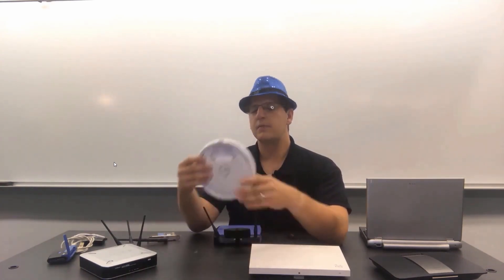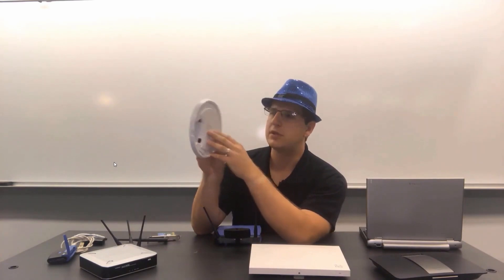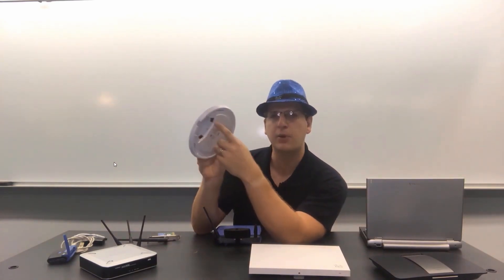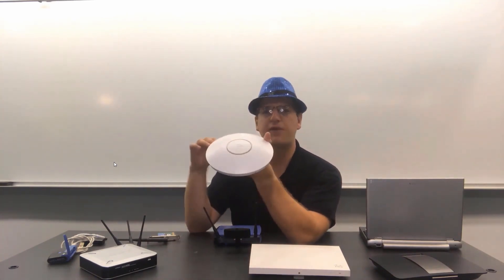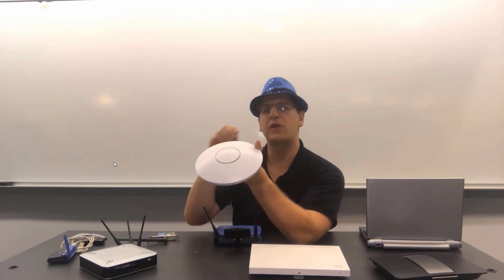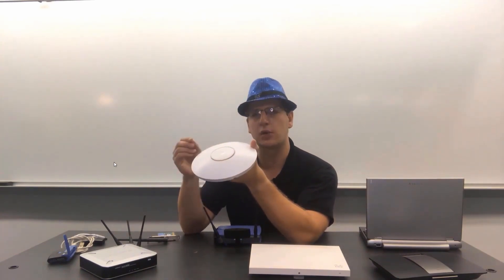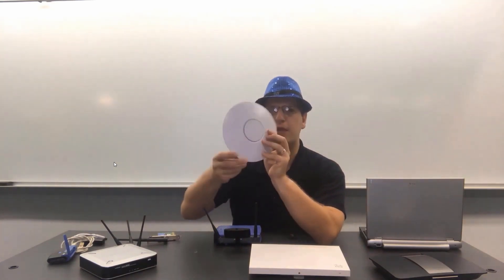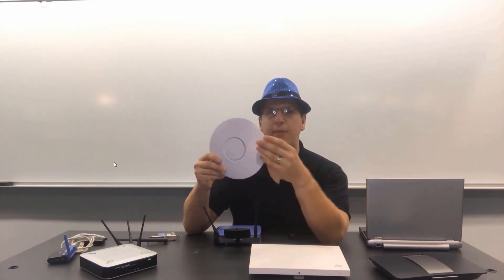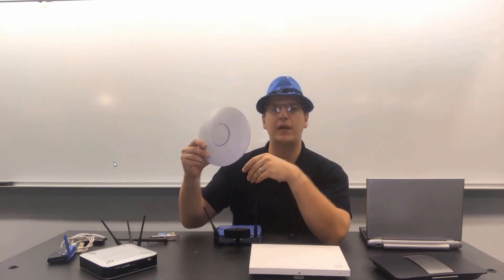There's another solution to go with besides autonomous and that's called controller-based. With controller-based access points, they're commonly called lightweight access points. These access points, they again, have maybe one or two ports. This one has two, a primary network port and a backup in case the primary goes down. But these lightweight access points that are controller-based do not require individual configuration of each access point. You configure a wireless LAN controller, a WLC. And when you configure that controller and you plug these into the network that the controller is on, the wireless controller will configure and manage all of your lightweight access points.